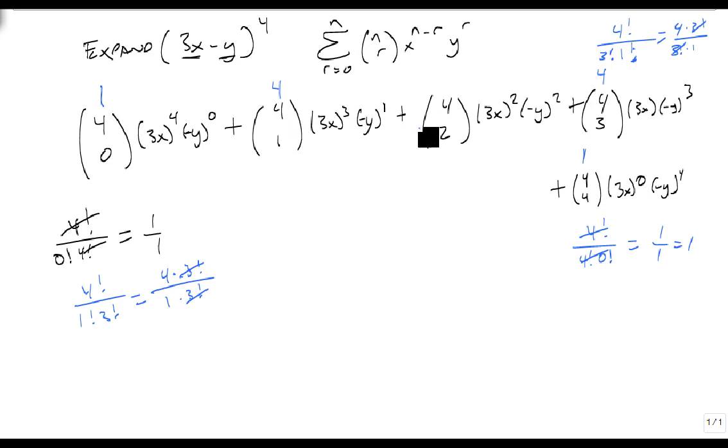These two match, these two match, and then this one's by itself. So 4 choose 2 is 4 factorial over 2 factorial times 2 factorial, which is 4 times 3 times 2 factorial over 2 factorial times 2, which is 6.